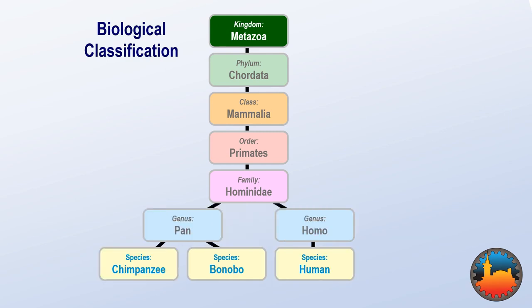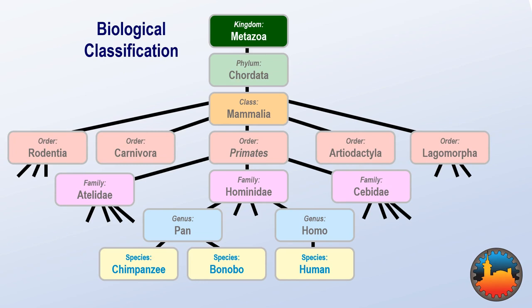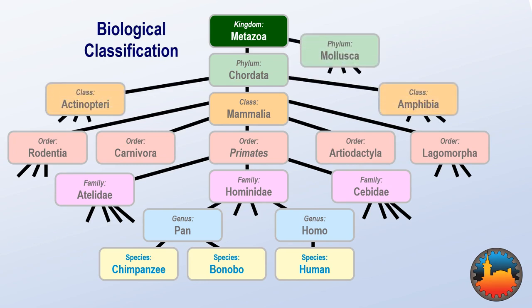Chimpanzees and bonobos share a genus of Pan, and Pan and Homo are sister genera in the Hominidae family. Of course, this type of tree branching goes all the way up the tree of life. All multicellular animals are in the Metazoa kingdom.